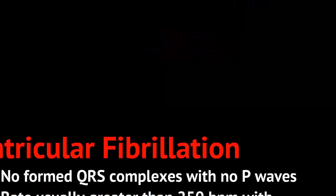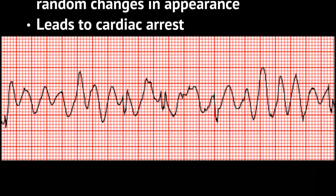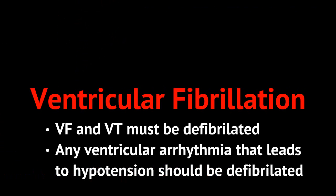V flutter is very unstable, which brings me to ventricular fibrillation. Ventricular fibrillation is also a very unstable rhythm with no formed QRS complexes and no P waves. The rate is usually greater than 250 beats per minute with random changes in appearance. Because the rate is so fast, blood is not pumped effectively out of the heart, and this can lead to cardiac arrest very quickly. Here's an example of ventricular fibrillation on a rhythm strip — you'll notice the coarse, undulating QRS complexes that have no rhyme or reason to them. Ventricular fibrillation must be defibrillated, and pretty much any ventricular arrhythmia that leads to hypotension should be defibrillated.